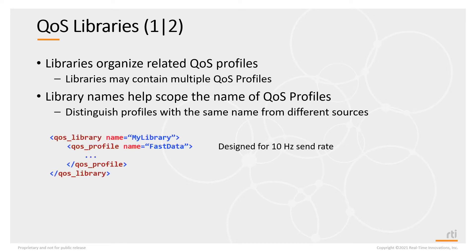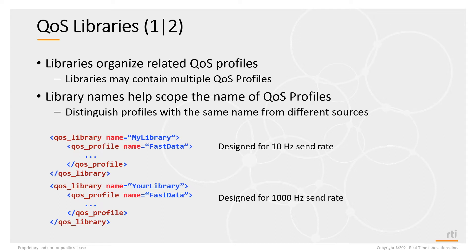For example, I may have a subsystem where 'fast data' means sending data 10 times a second, and I call that profile 'fast data.' You could also be creating a subsystem where fast data means a thousand times a second, and you create a QoS profile called 'fast data' as well. To avoid accidentally using each other's definitions, we can create these profiles and put them in separate libraries. My applications look for a QoS profile called 'fast data' in my library, and your applications look for 'fast data' in your library — making it very distinguishable where the QoS profile is coming from.